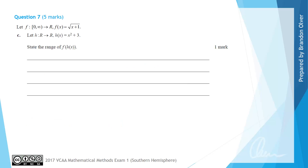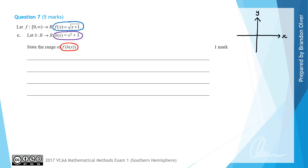For part c we now have the function h with a domain of all real numbers and a rule h of x equals x squared plus 3. We are still working with the original function f where f of x equals the square root of x plus 1. We are asked to state the range of f of h of x. On the sketch: f, shown in blue, starts at 0 comma 1 and has the square root shape. The function h, shown in purple, is a parabola translated 3 units up with a minimum turning point at 0 comma 3.